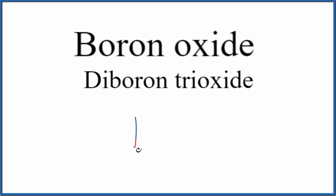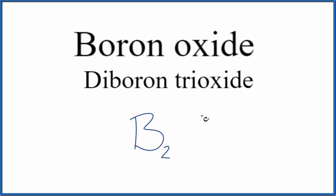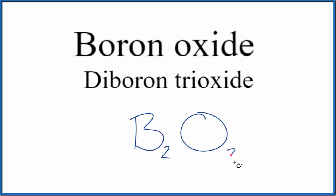So boron — that's B on the periodic table. And di means two, so we have B₂. Oxide — that's O for oxygen. And tri means three. So the formula for diboron trioxide is B₂O₃.